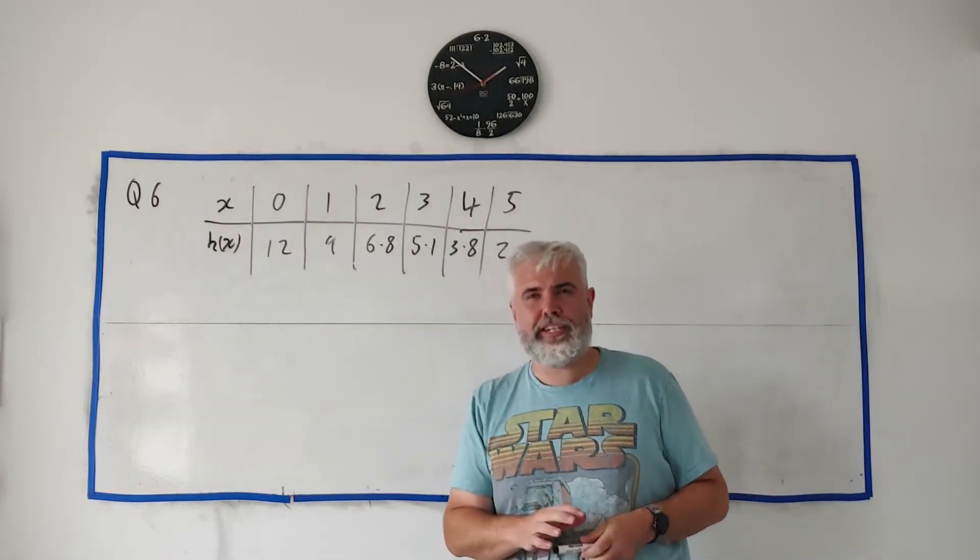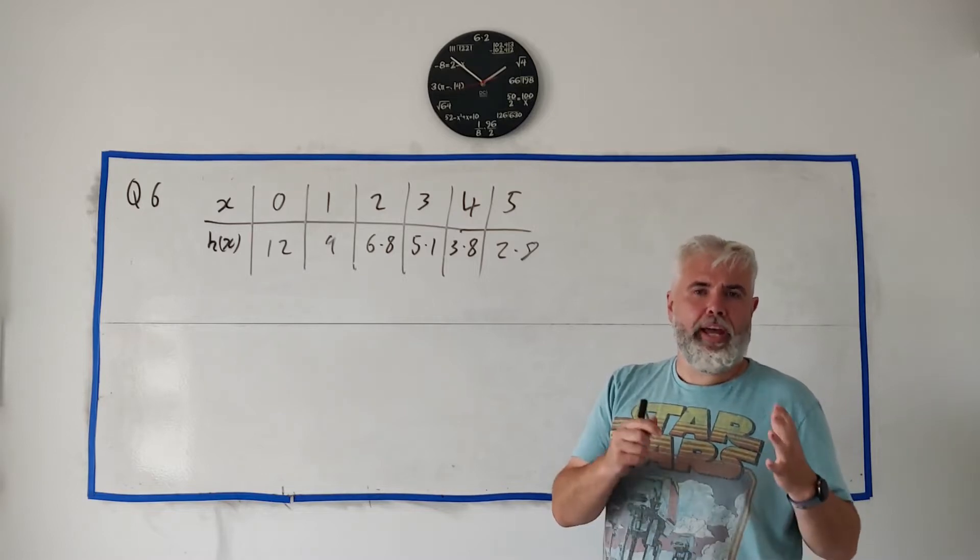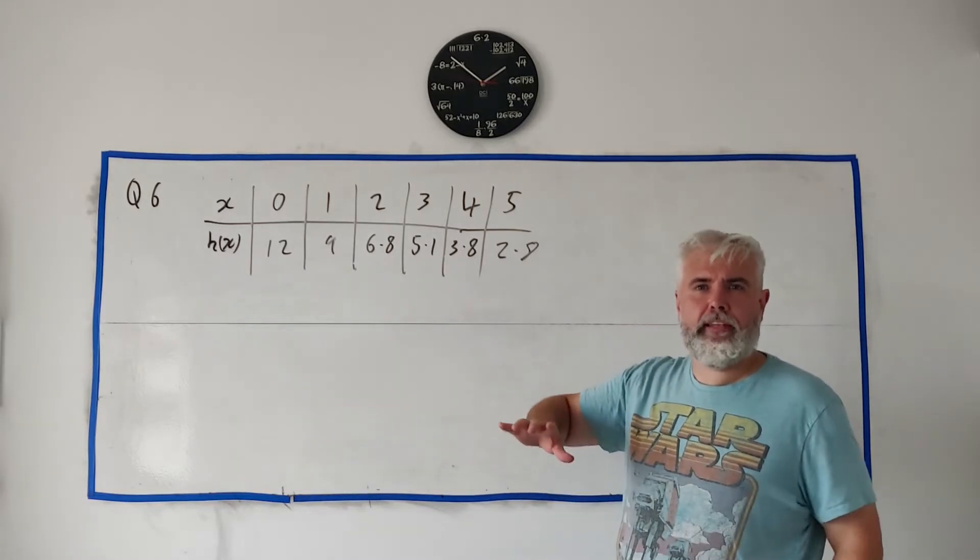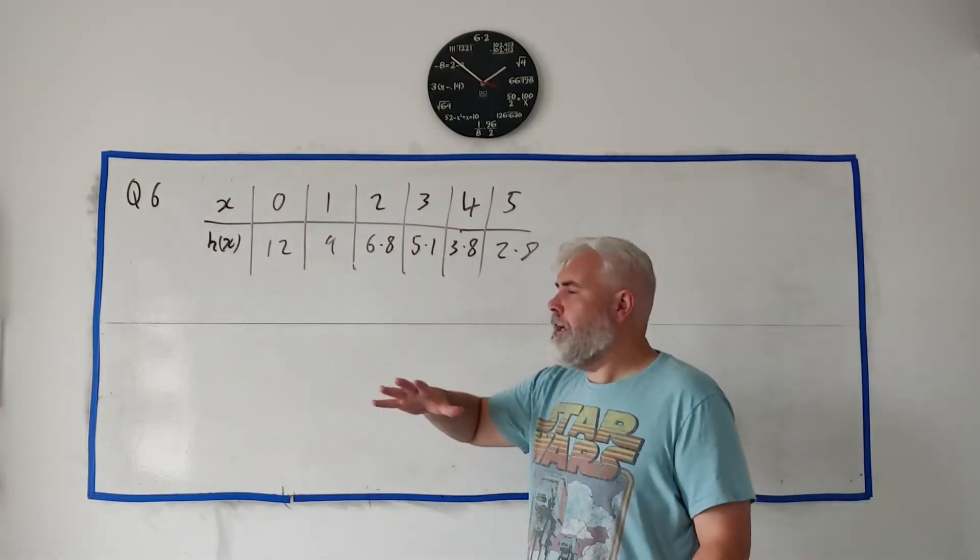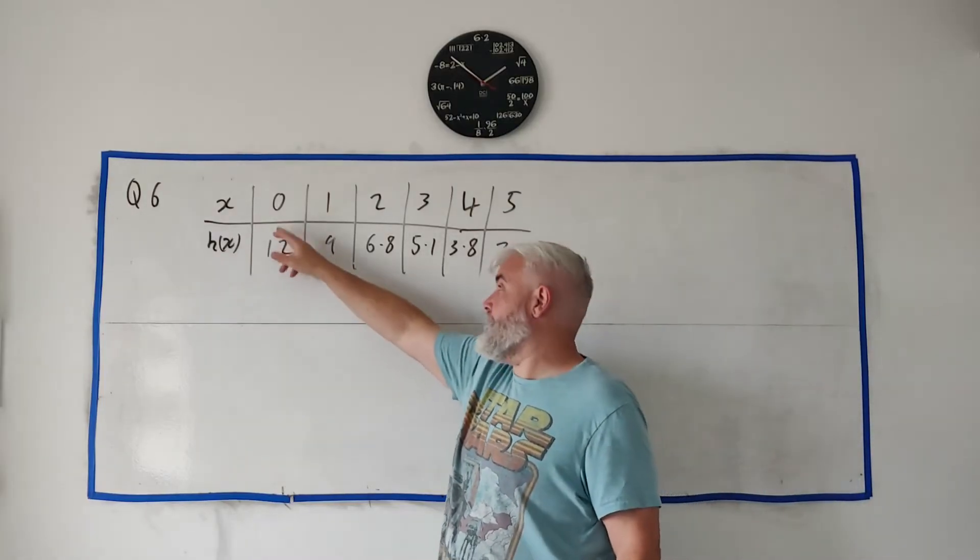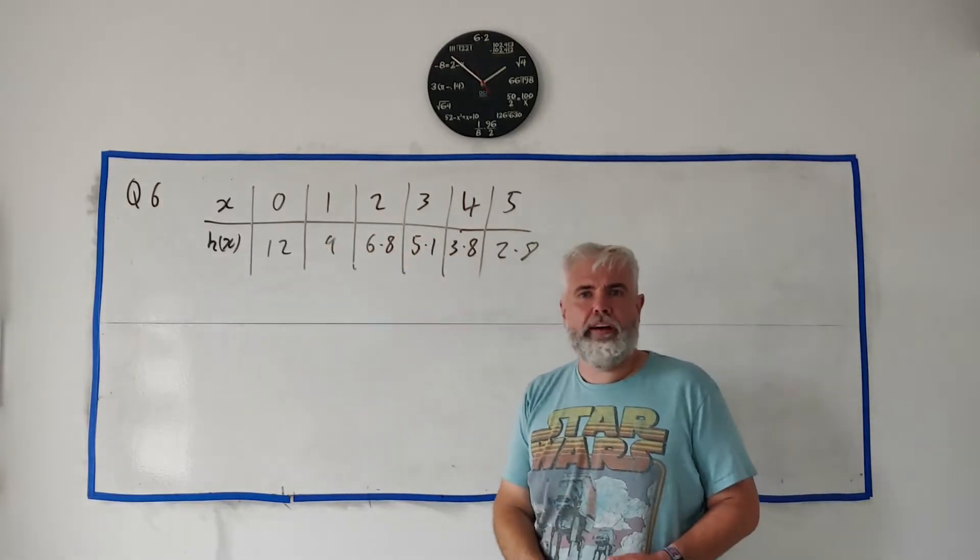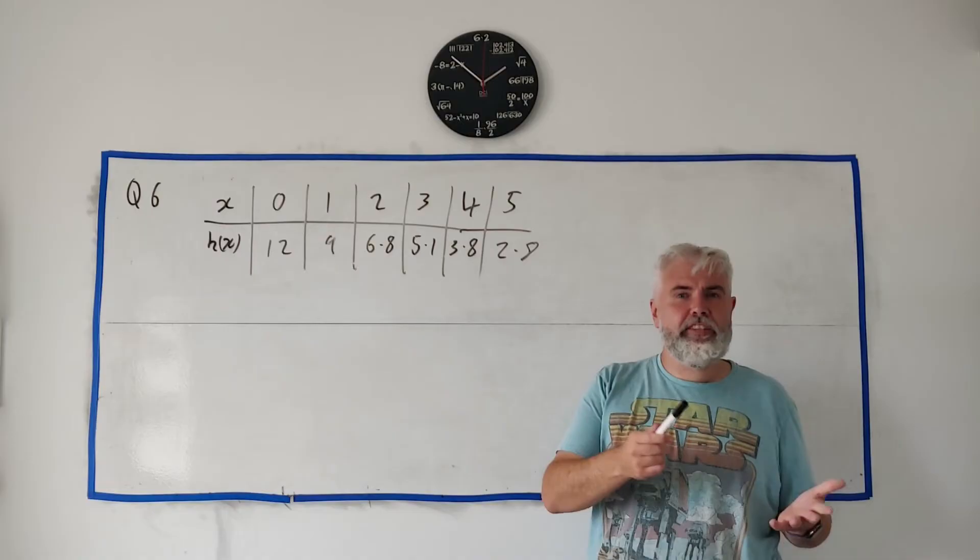In part B they tell us about a student Liam who's going to use a trapezoid rule to estimate the area underneath this curve. Now Liam has did what we did in part A and estimated some numbers: at 0 they got 12, at 1 they got 9, and so on, all these numbers in the graph.